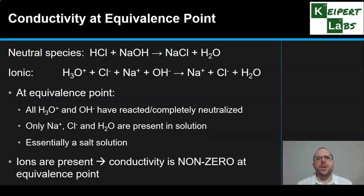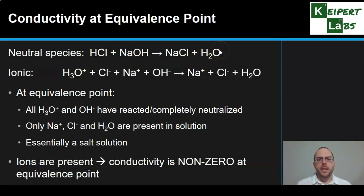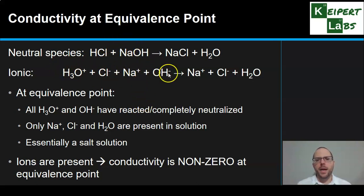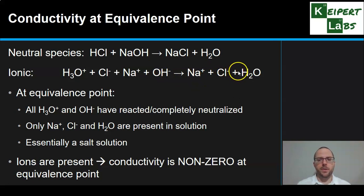What does conductivity at the equivalence point actually mean? Looking at the HCl plus NaOH example, if we write out the full ionic equation, we have hydronium ions and chloride ions from the acid, and sodium and hydroxide ions from the base. As the reaction takes place, the products are sodium ions, chloride ions, and water molecules — so there are no hydronium or hydroxide ions anymore. We've taken two ions and combined them to make two molecules, while sodium and chloride ions remain as spectator ions.